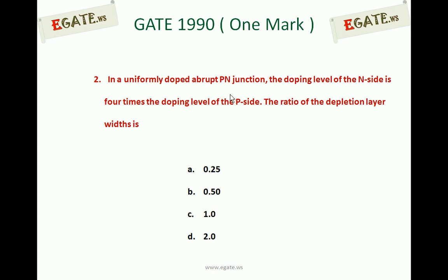In a uniformly doped abrupt PN junction, the doping level of the N side is 4 times the doping level of the P side. The ratio of the depletion layer width is: A. 0.25, B. 0.50, C. 1.0, D. 2.0.